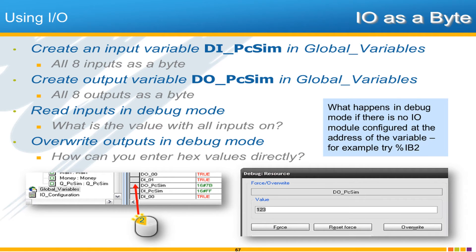For the next activity called using I/O as a byte, I'd like us to create an input variable that contains all 8 inputs and another variable that contains all 8 outputs. For this activity, you should create these variables in the global variables list. We'll be able to look at that in debug mode and learn a few other things. If you think you know what to do, pause the video and see if you can work through it.